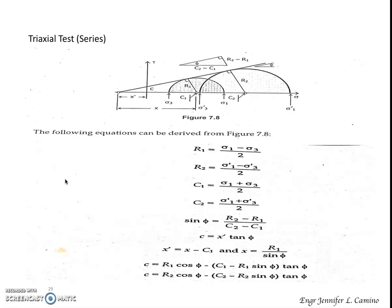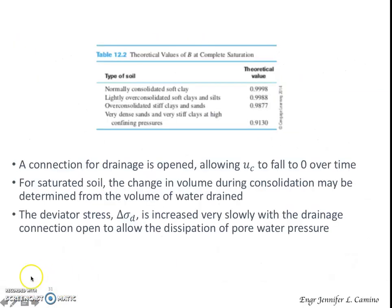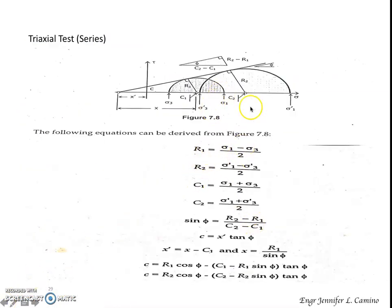For a series test in a triaxial shear test, we have illustrated here two or more Mohr circles, so this illustrates a series of triaxial tests. From this figure, we can derive the following equations for the computation of R1, R2, C sub 1, and C sub 2. For the cohesion for the first test, we can derive this equation using the radius.